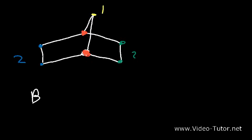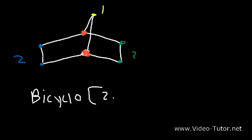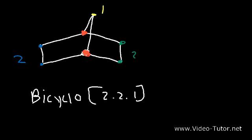To name it, it's called a bicyclo compound. In descending order the bridges give 2, 2, 1. Then add the total number of carbons: the sum of these three numbers (2+2+1=5) plus the two bridgehead carbons equals seven. So the name is bicyclo[2.2.1]heptane.